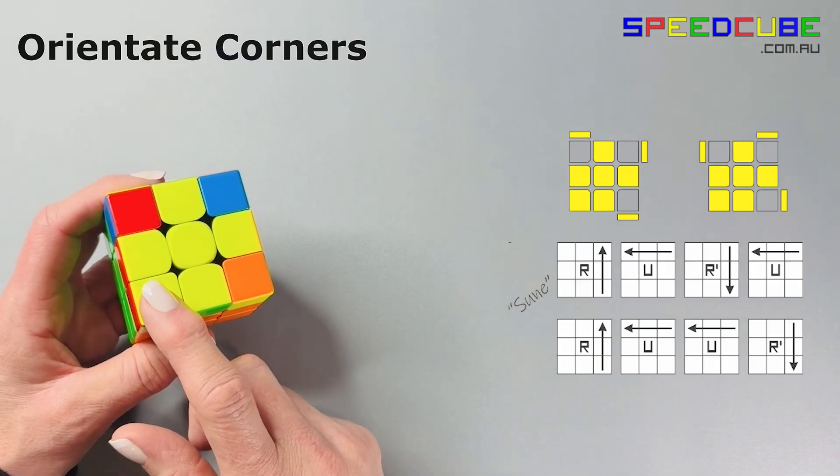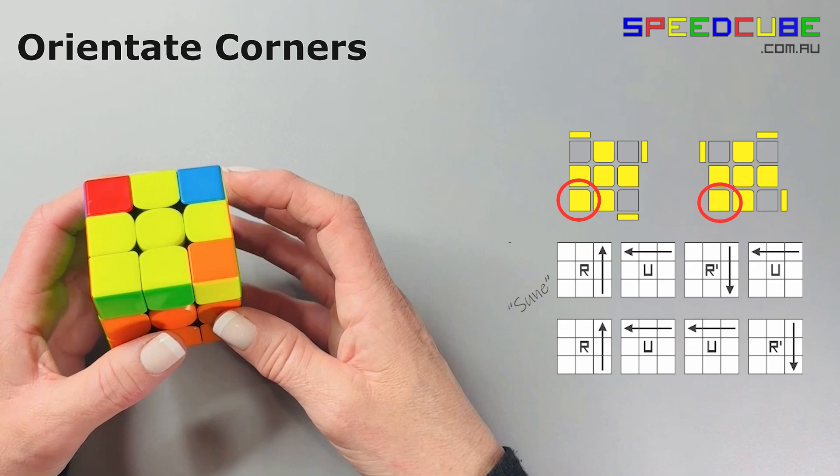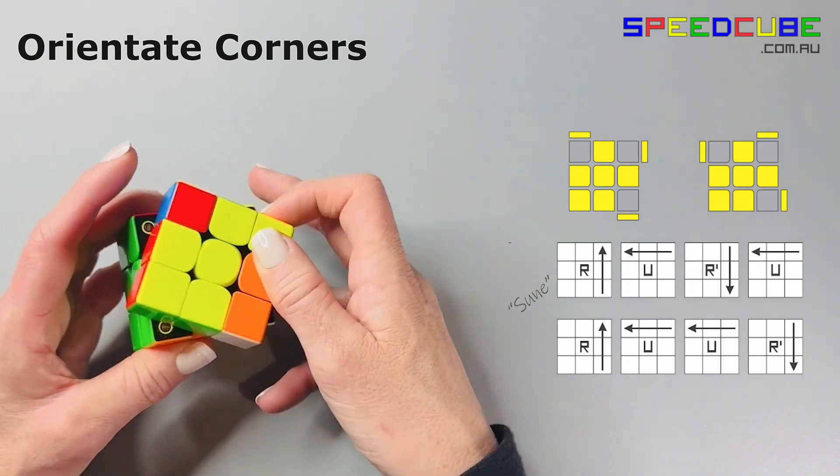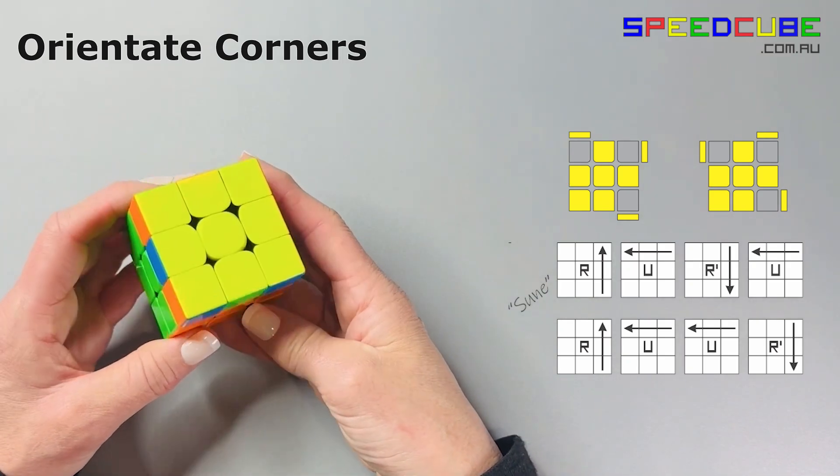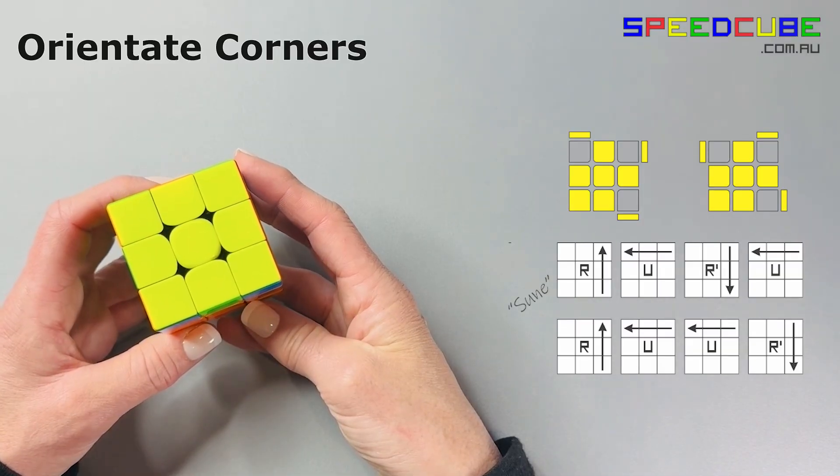Now that takes you to the case where you have one sticker facing up, and we perform that algorithm again, which takes us to all the yellows being orientated.